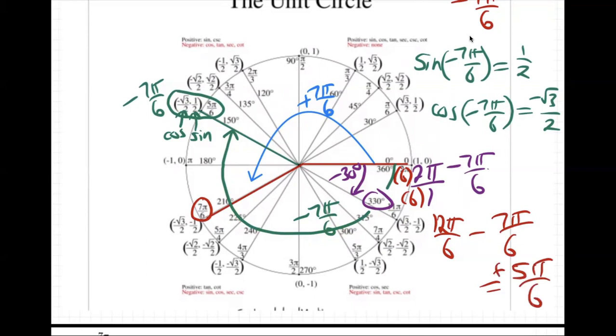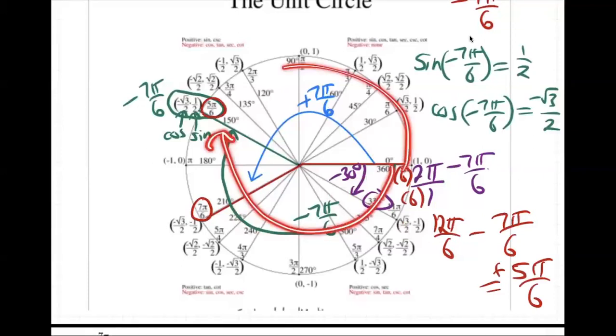Yeah, positive 5π over 6. That is the same spot as negative 7π over 6, right? Because negative 7π over 6 and positive 5π over 6, they end in the same spot. Because altogether, they make a full circle. They make 360. They're the same spot.